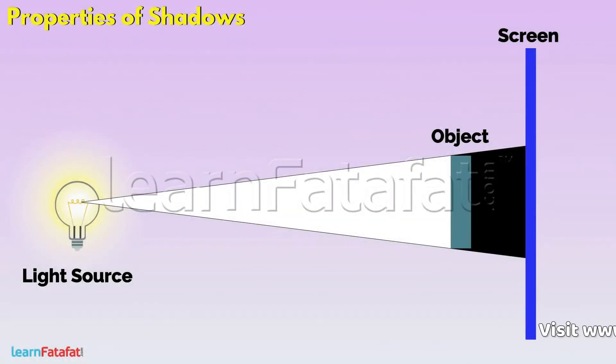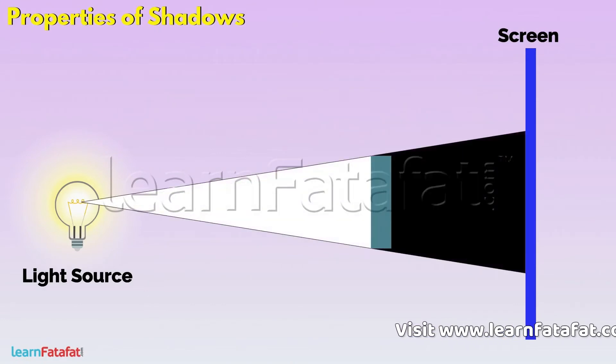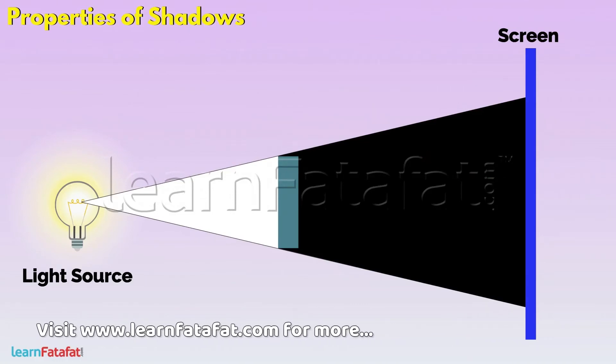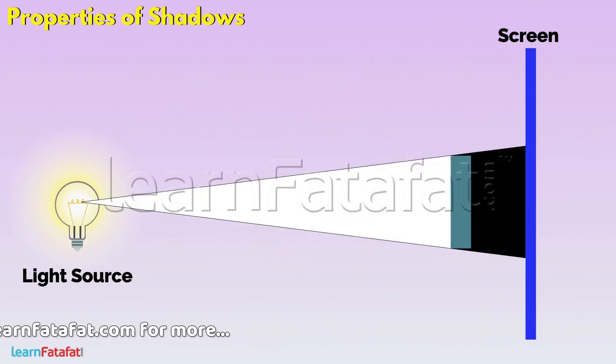Suppose the object moves towards the source, the size of shadow increases. But if the object moves away from the source, then the size of shadow decreases.